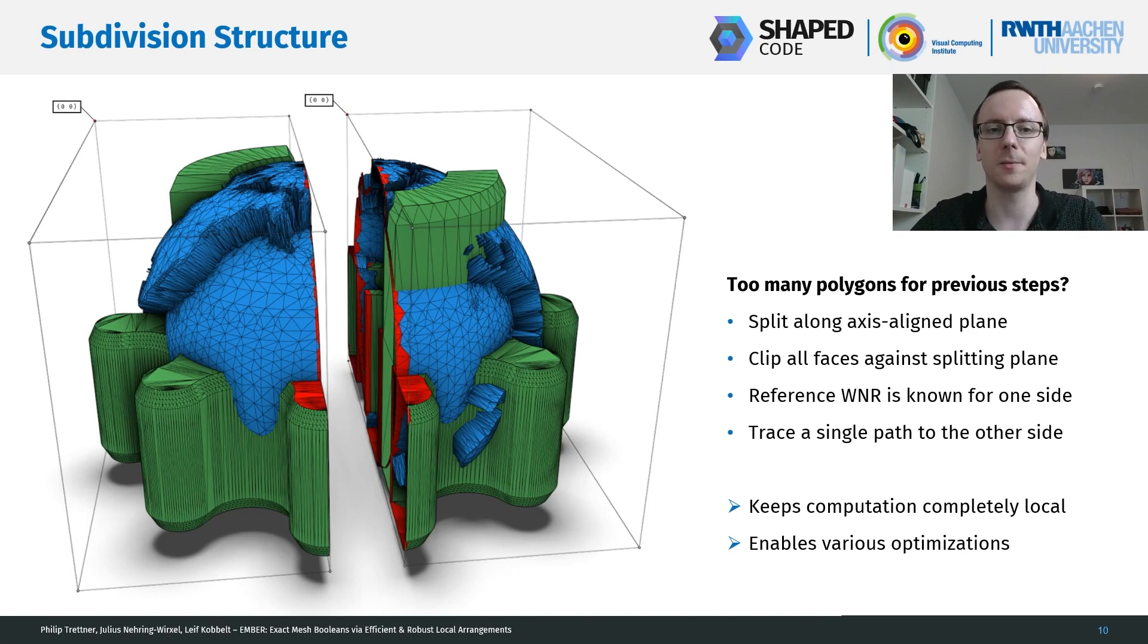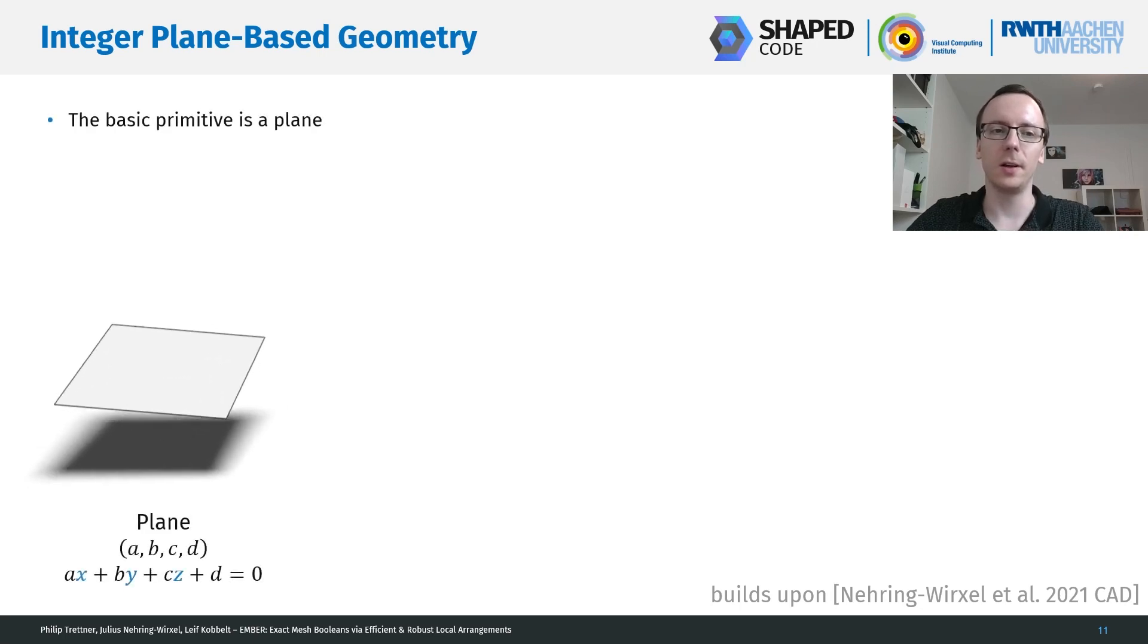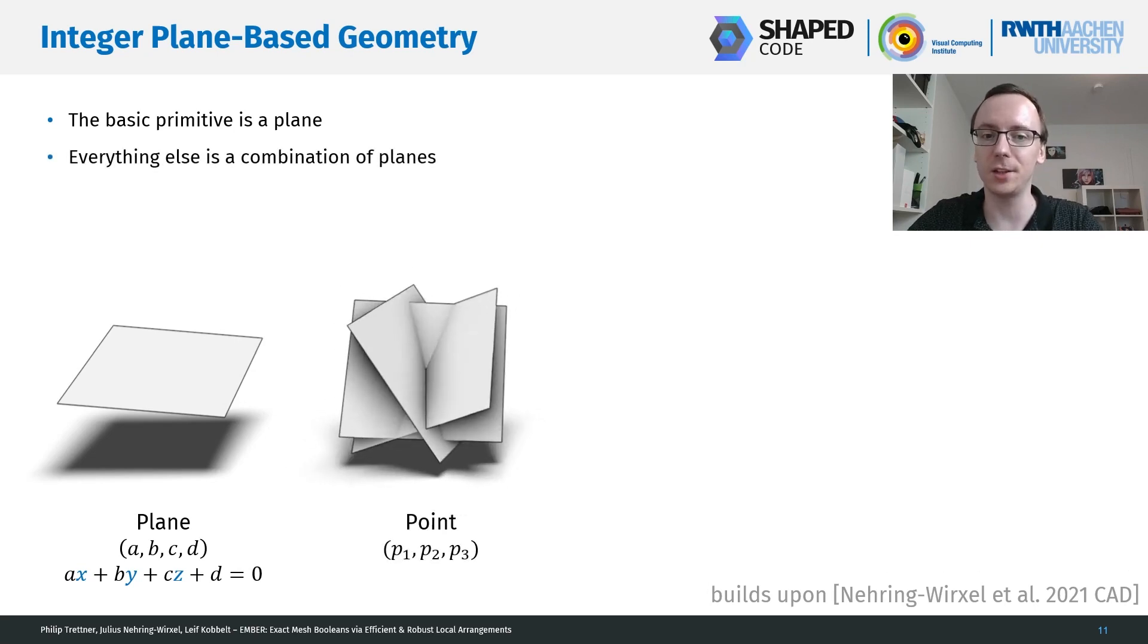To compute all these intersections and to do the segment tracing, we're working within a plane-based geometry paradigm that builds upon our previous work. So in this paradigm, the basic primitive is a plane. A plane is characterized by the four coefficients of its plane equation. And everything else is just a combination of planes. So the points that we get from intersections are not computed in 3D coordinates, but rather as the combination of three planes.